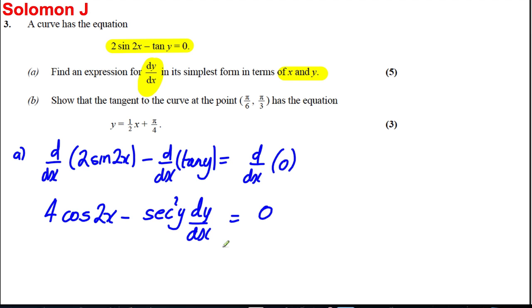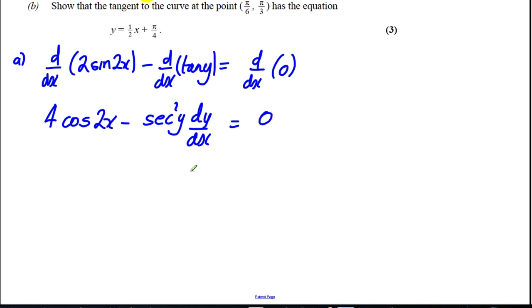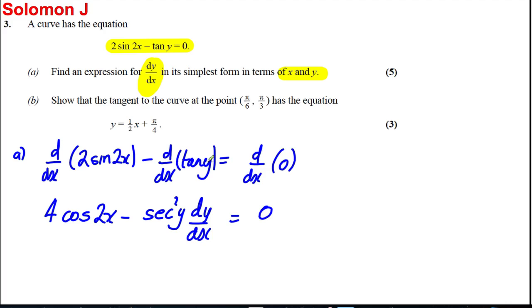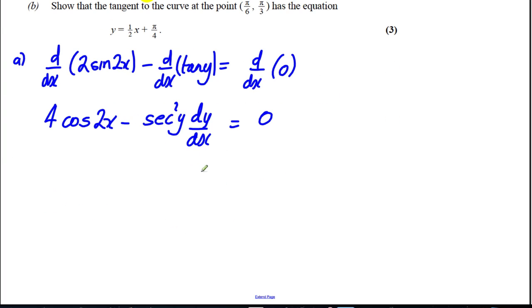So therefore what have we got here? We've got ourselves, we want to find what dy over dx in its simplest form. We could add sec squared dy/dx to both sides, so sec squared y dy/dx is equal to 4 cos of 2x.